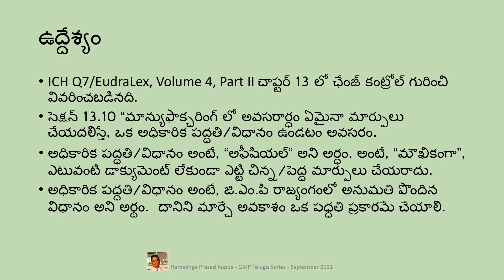The intent of change control is explained here. Both ICH Q7 and EUDRALEX Volume 4, Part 2, prescribe the minute requirements in section 13. Section 13.10 prescribes that there should be a well-defined system to address the completeness of justification for any change to an approved system. There is no provision in the guide to make any changes verbally; such verbal changes are not acceptable. An official approved system is similar to the constitution of a country which cannot be changed without discussion and review before approval as per law.